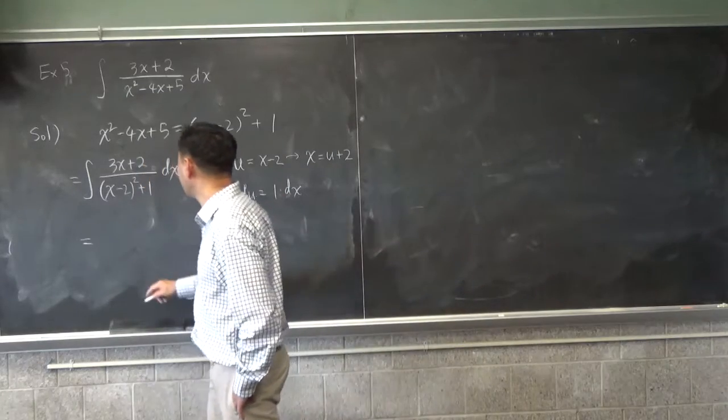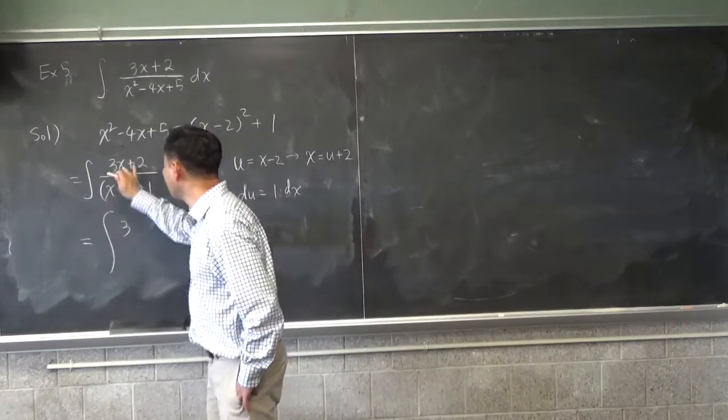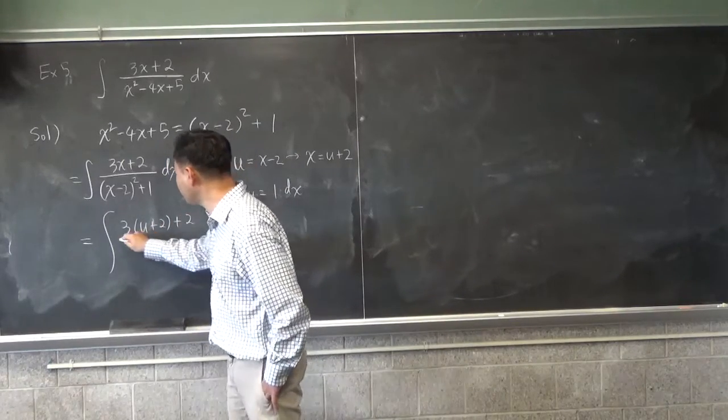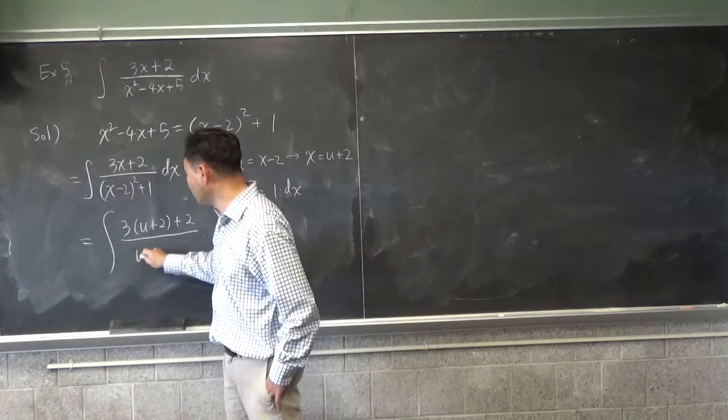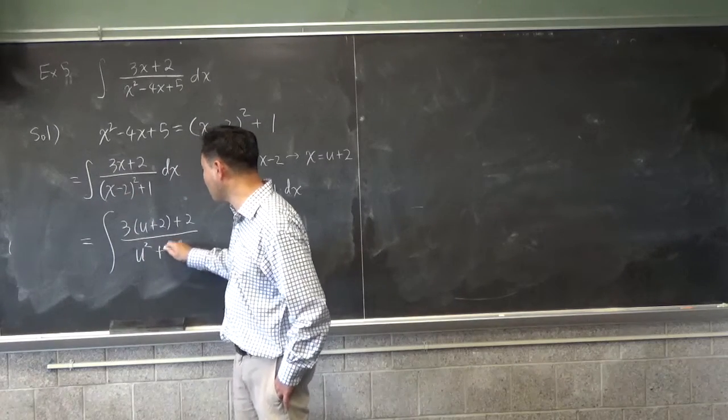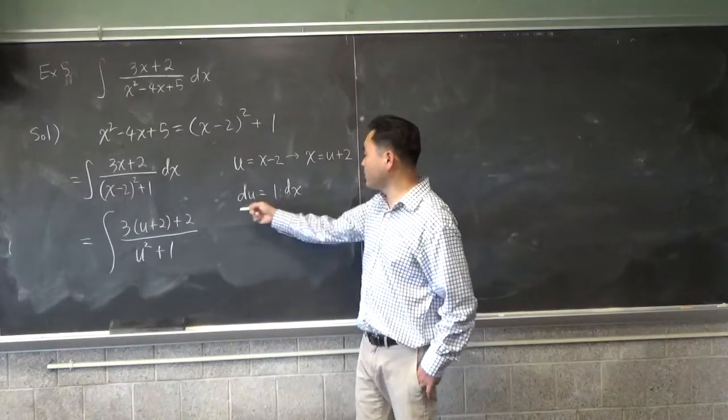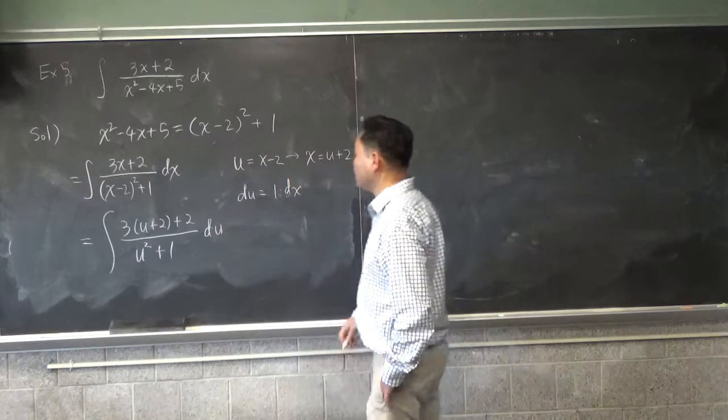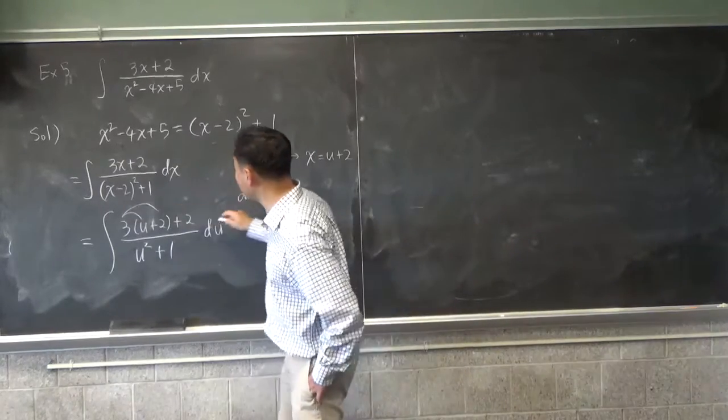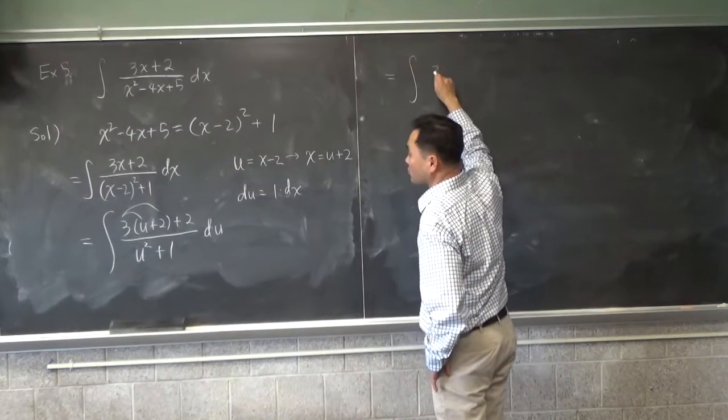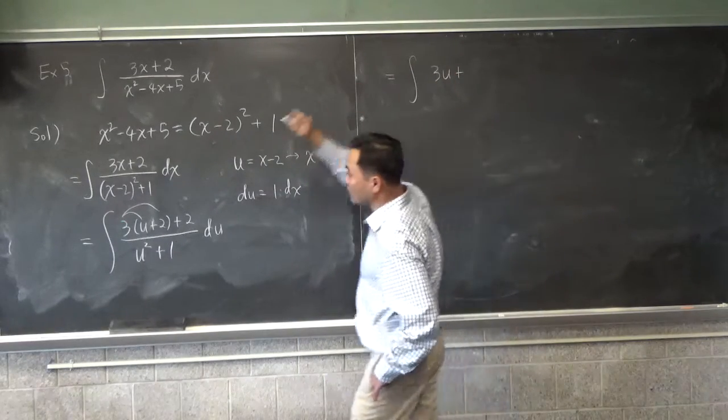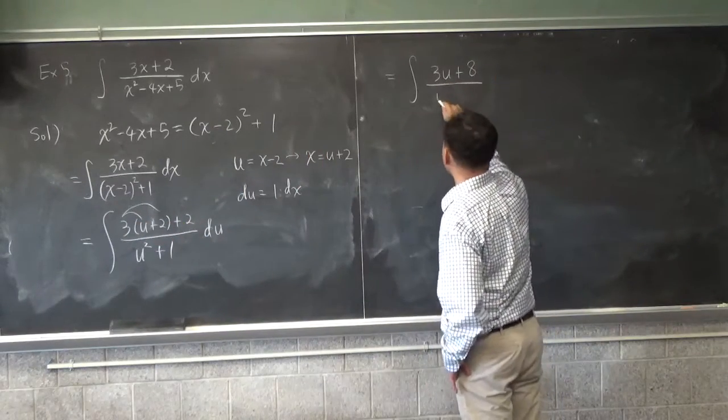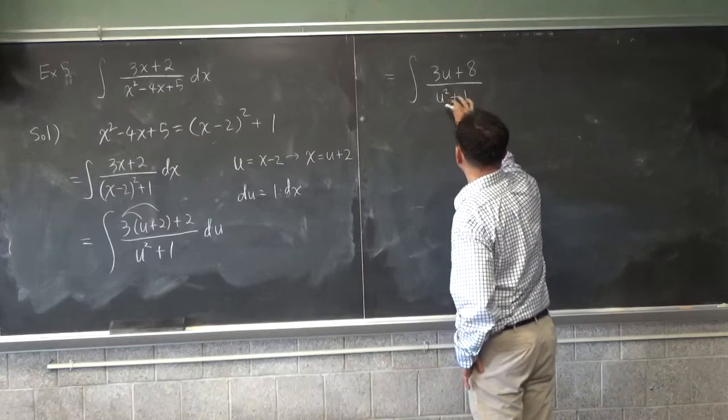Okay, that means first of all you see an x. Right, x is replaced by u plus 2. x minus 2 is u, so you get u squared plus 1 in the denominator. And this one says dx is the same as du, so I can replace this by du. And then I should multiply this out so that you get the integral of 3u, and then 3 times 2 is 6, 6 plus 2 is 8, and you get u squared plus 1 du.